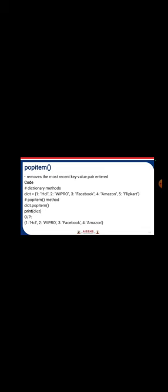The pop() method eliminates an element using a defined key. For example, dict.pop(1) will remove 'hcl' and the rest will be displayed as output. The popitem() method removes the most recently inserted key-value pair. Since flipkart was the last element inserted, it will be removed, and the output will show hcl, wipro, facebook, and amazon.